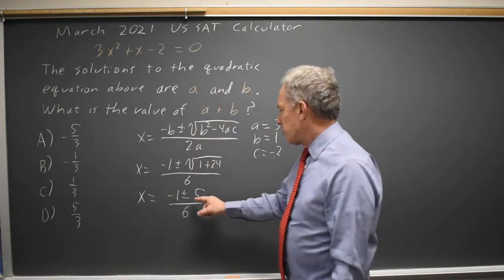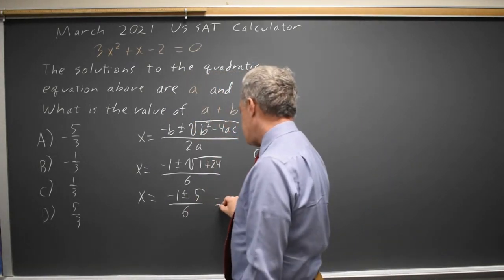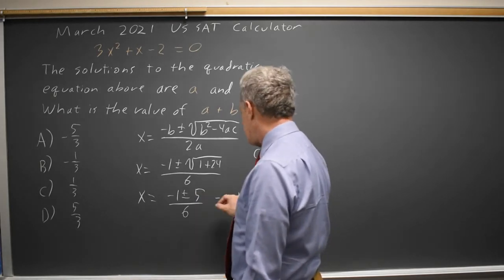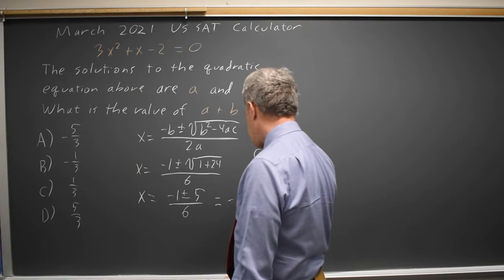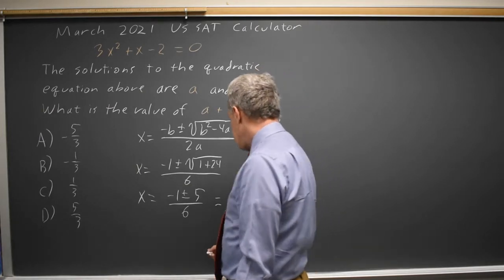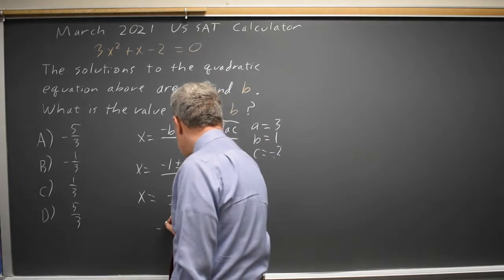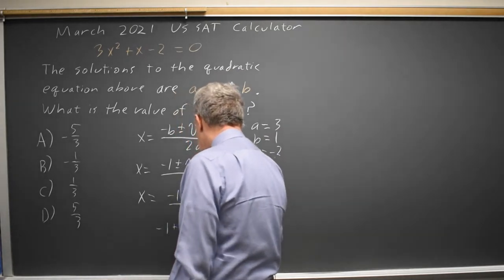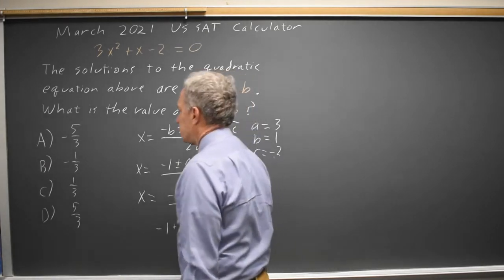You can either find that this is negative 6 over 6, which is negative 1, or positive 4 over 6, which is 2 thirds. And the sum is negative 1 plus 2 thirds equals negative 1 third, choice B.